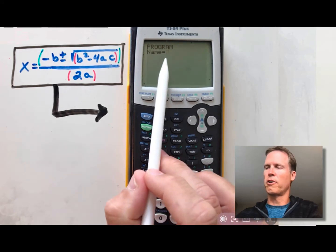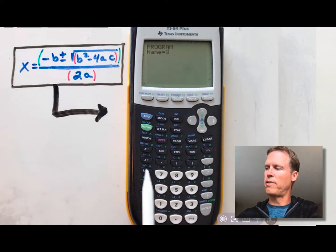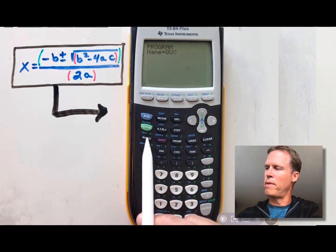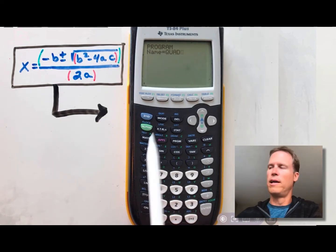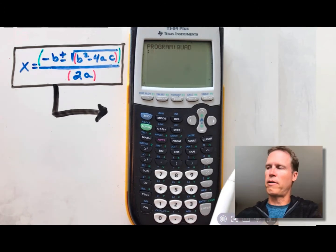You'll notice your cursor has a flashing A. That means you are in alpha lock mode. So every button you press has a letter above the key. Press 9, 5, math, and then x to the negative 1. That'll spell out the word quad for naming your program. Then press enter and move on to the next line.